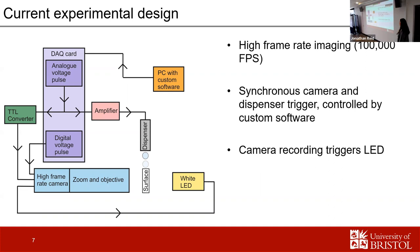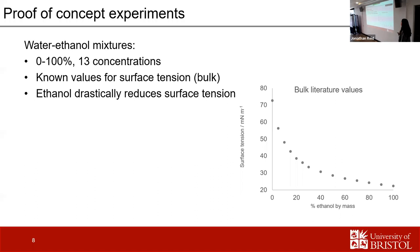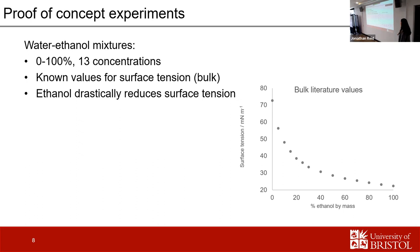For the proof-of-concept experiments, I looked at water-ethanol mixtures across 13 different concentrations between 0 and 100 percent ethanol. These are good mixtures because we have known bulk surface tension values, and since there are no surface-active components in water or ethanol, we wouldn't expect those surface tensions to differ from the bulk in picoliter droplets. Ethanol drastically reduces surface tension, so this allows us to probe a wide range of surface tensions using this technique.